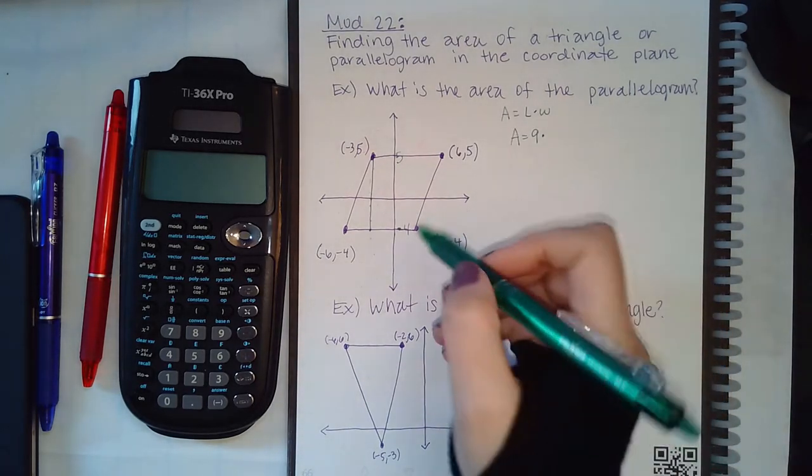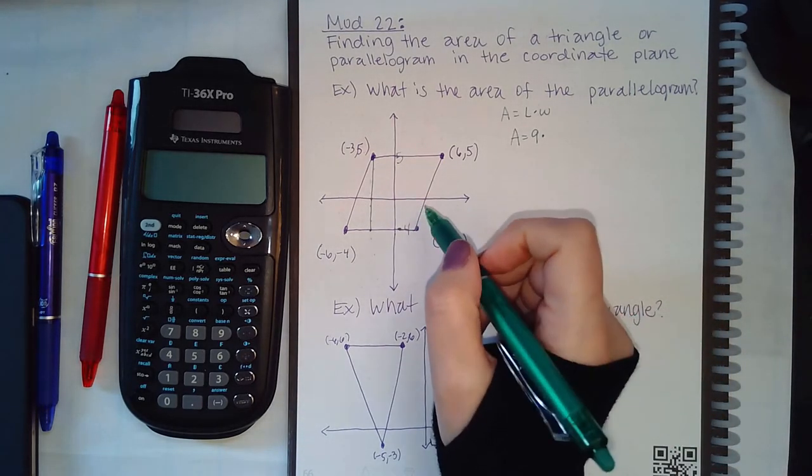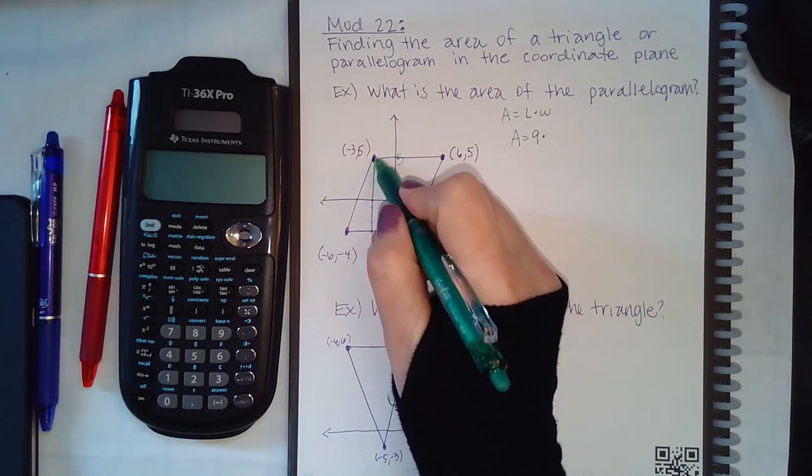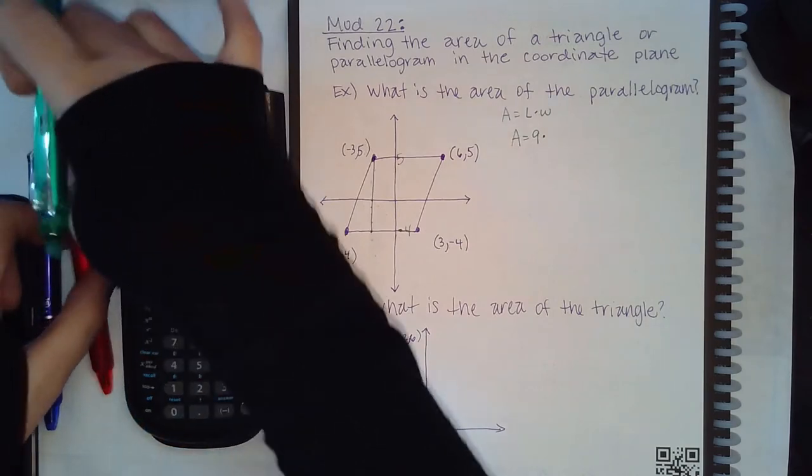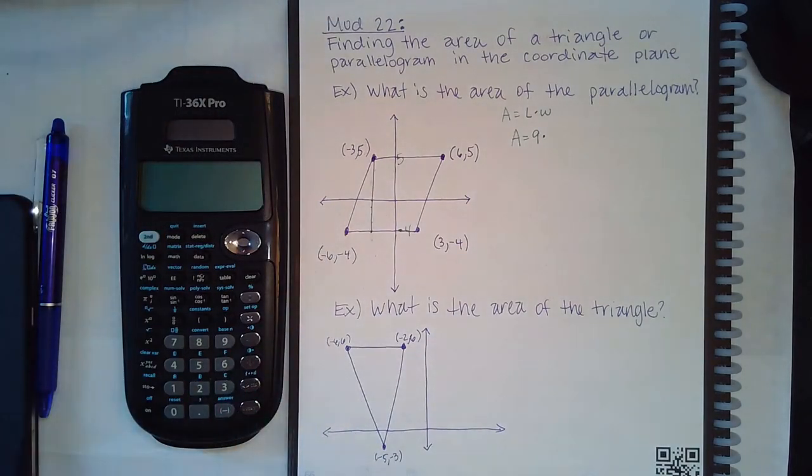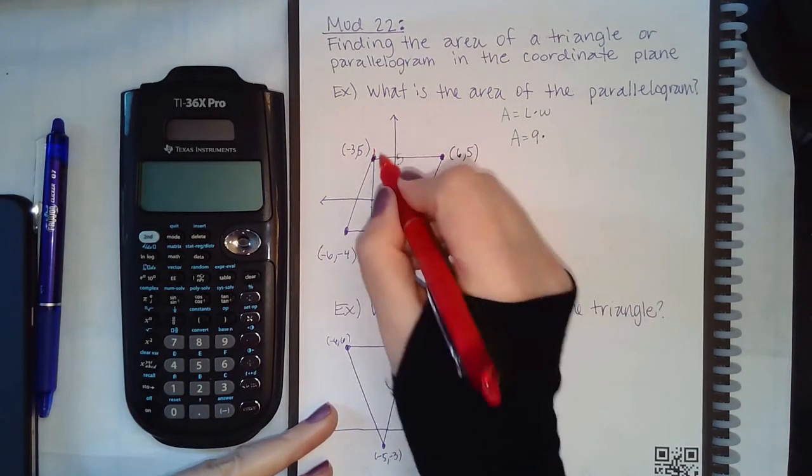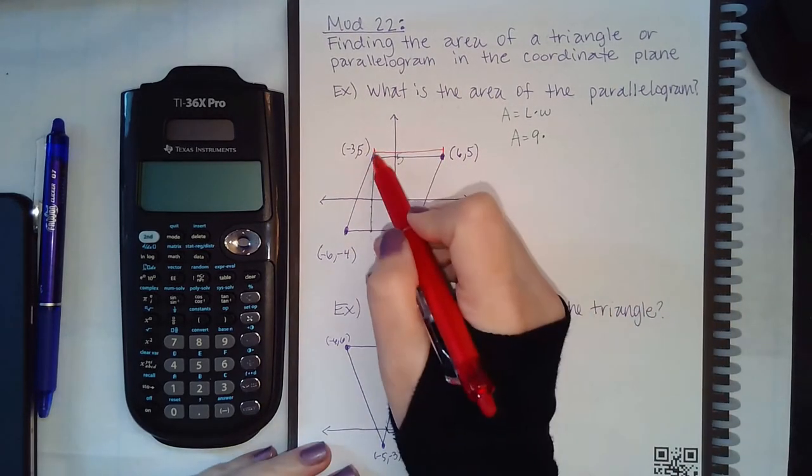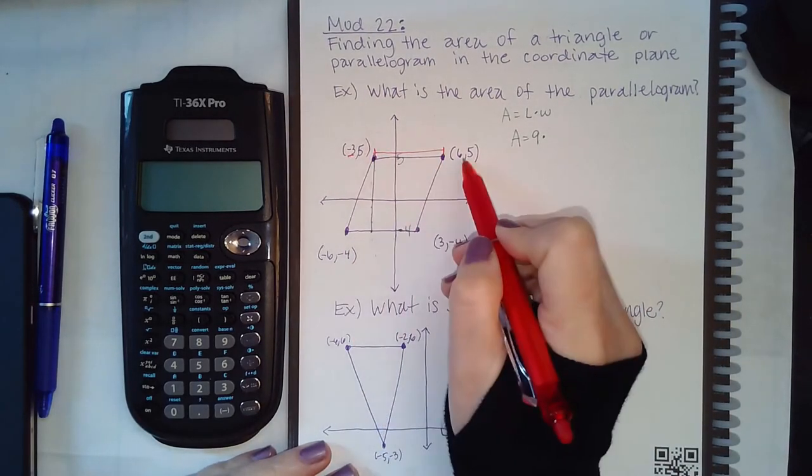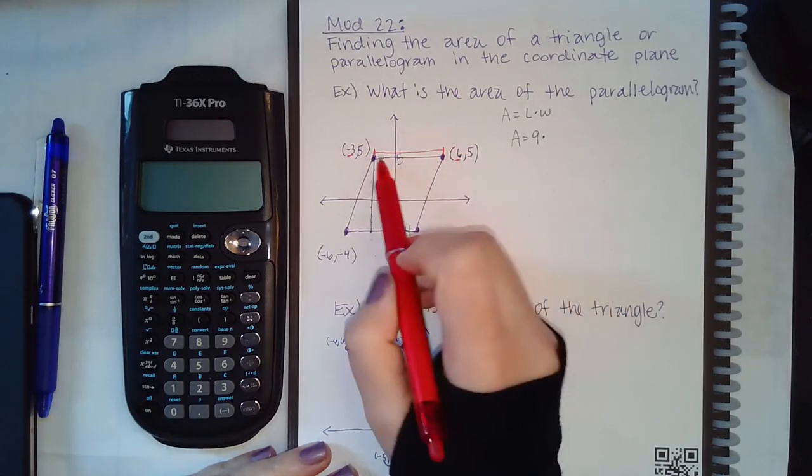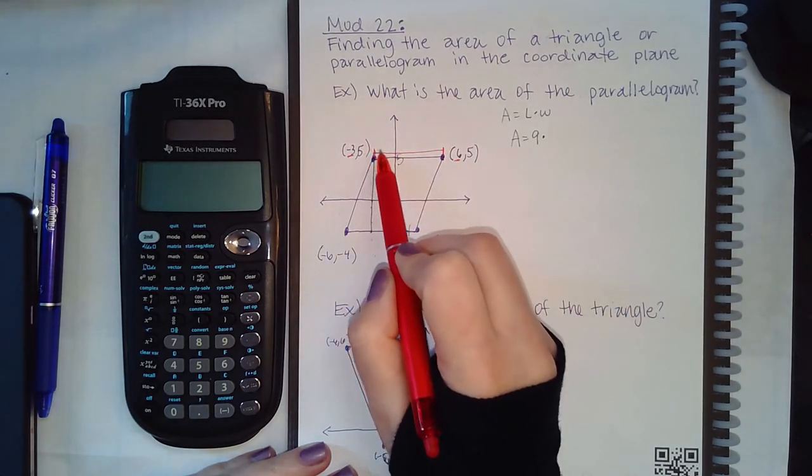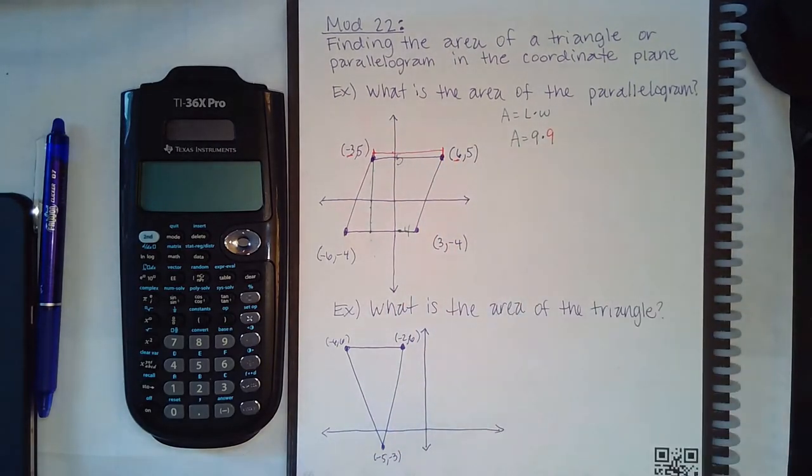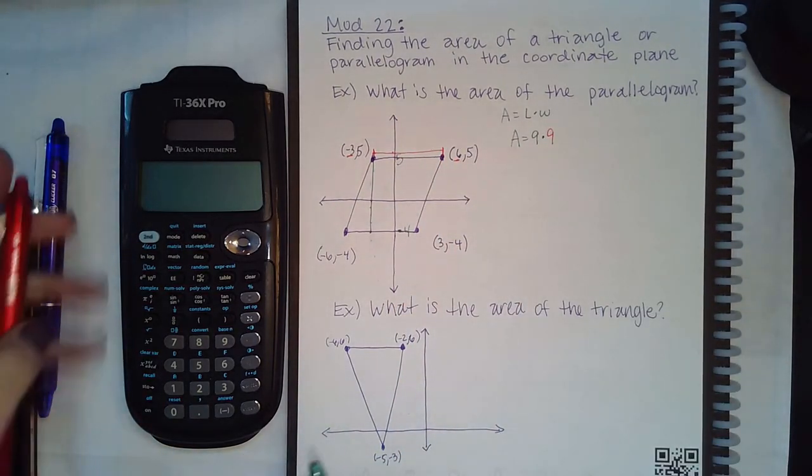To get the width, you're going to go from one dot here to the next dot over there. How much has passed there? Well, this x value is negative 3 and this x value is 6, so we would have had to have gone 3 units over and then 6 more, making the width 9 units.